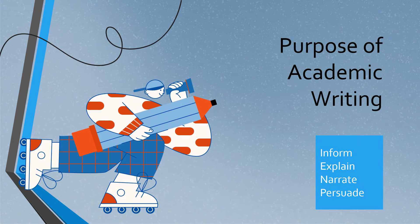Writers choose academic writing to communicate their intended meaning to a specific audience. Some general purposes include to inform — sharing facts and other information. However, the facts should be supported by evidence to enhance their authenticity.